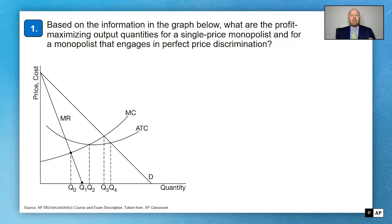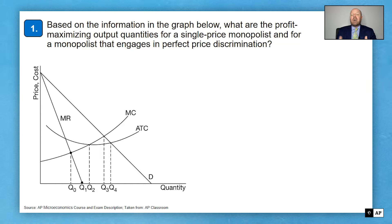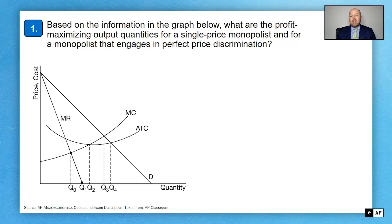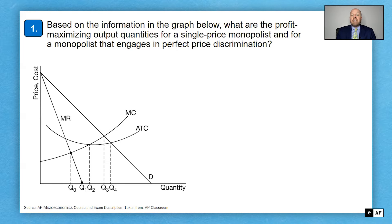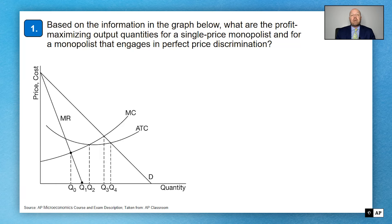Question number one: based on the information in the graph, what are the profit-maximizing output quantities for a single-price monopolist and for a monopolist that engages in perfect price discrimination? Profit-maximizing can also be described as loss-minimizing — same thing. A single-price monopolist sets one price for all consumers, which is the everyday monopoly graph we draw in class.